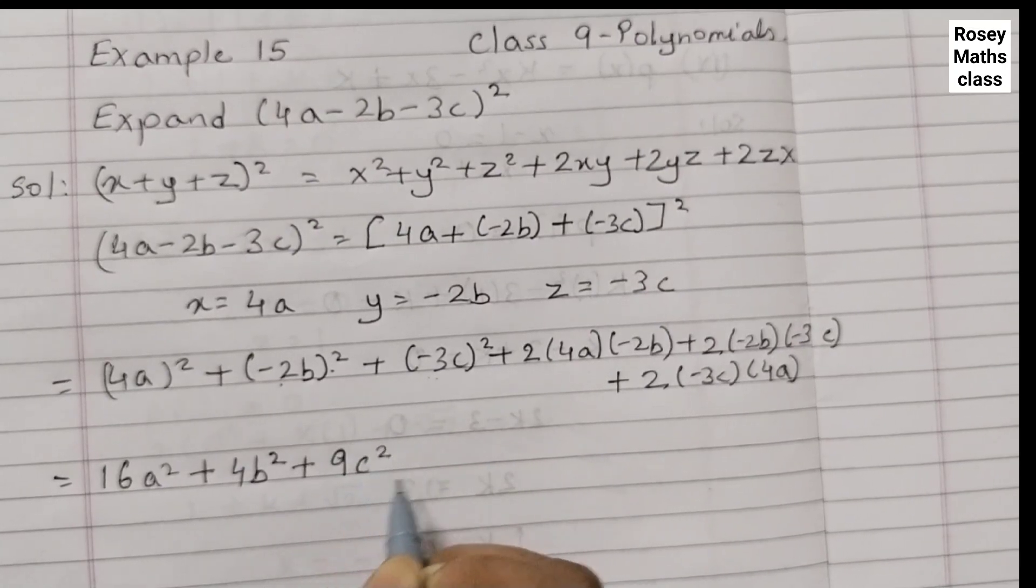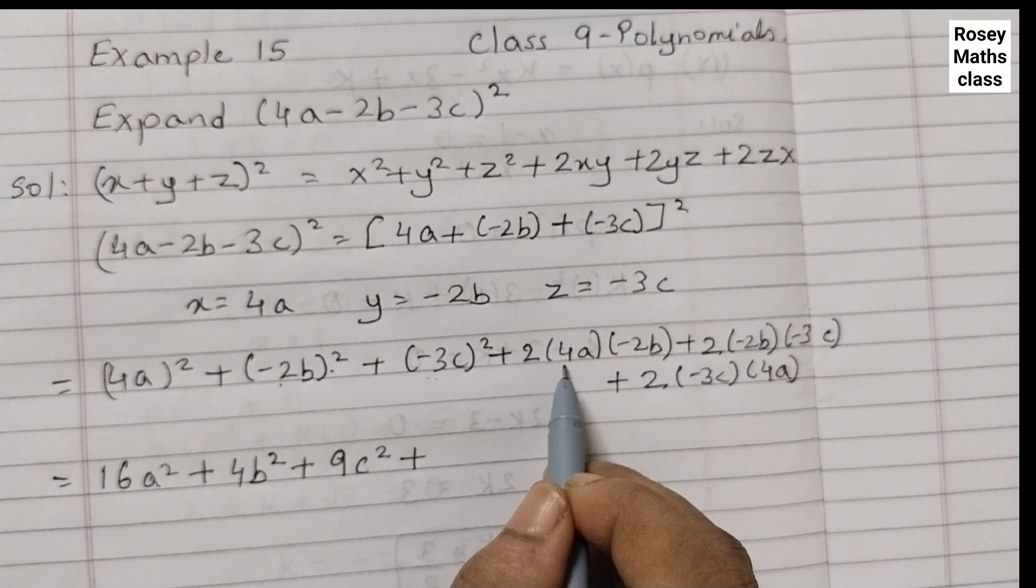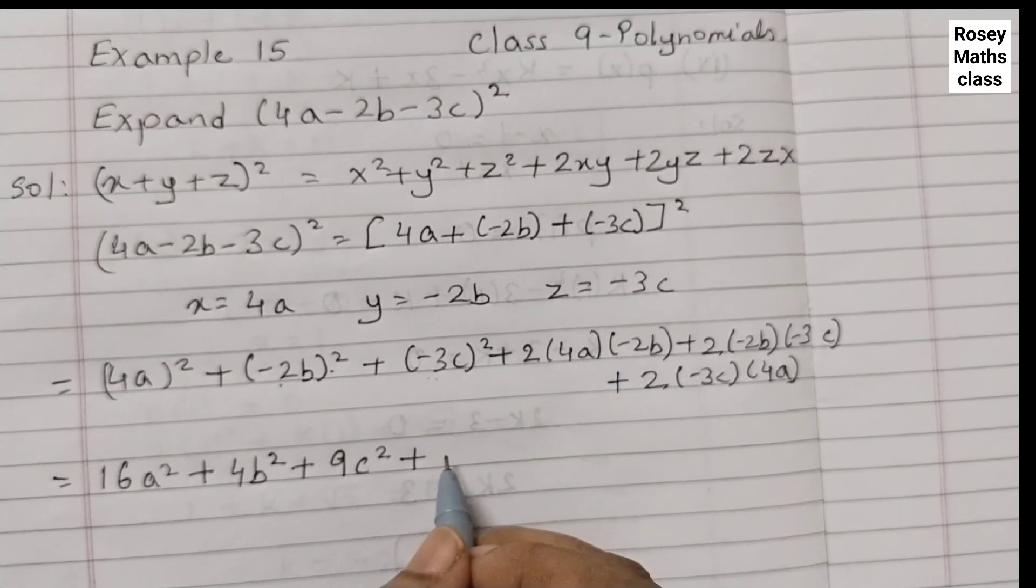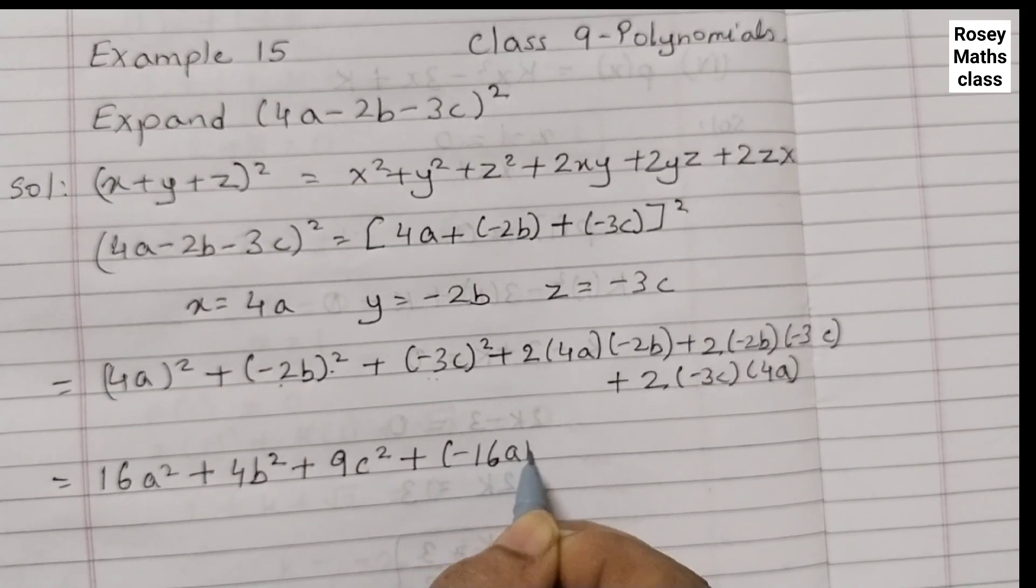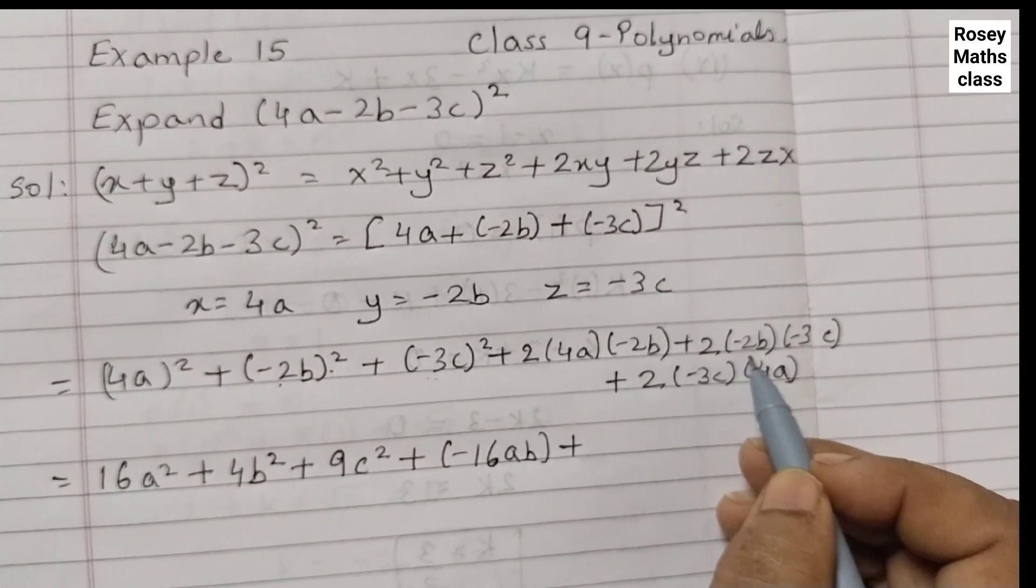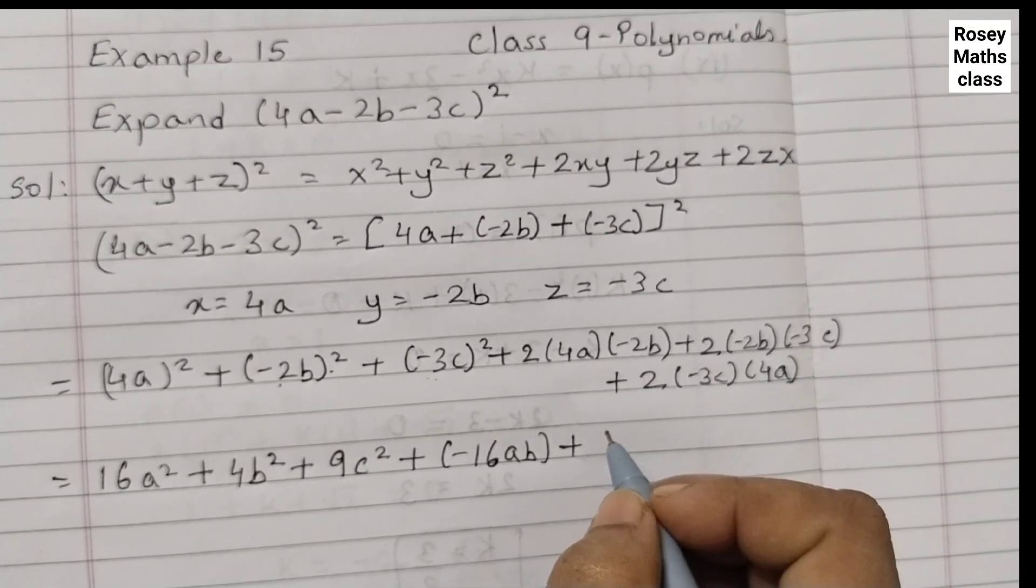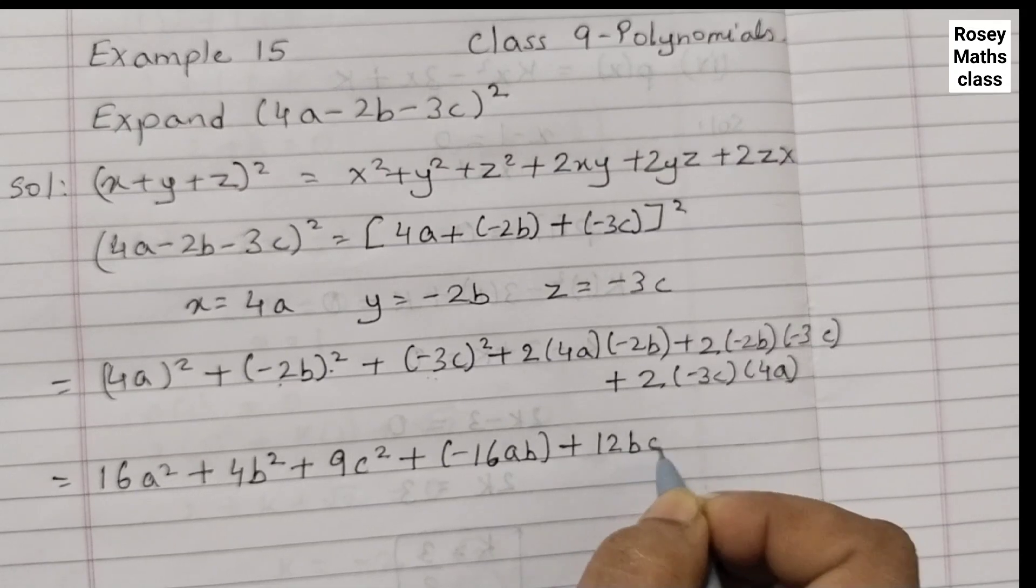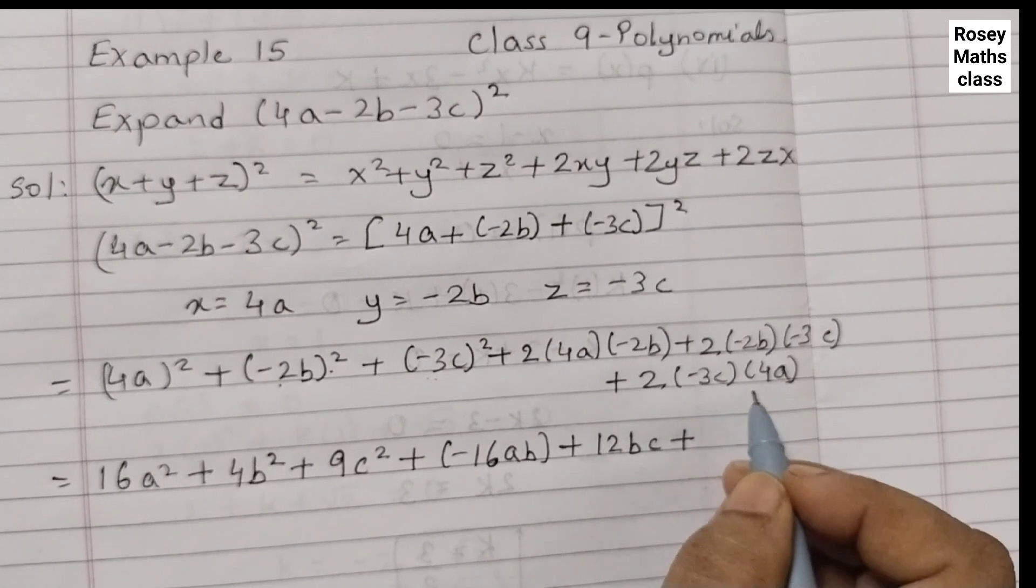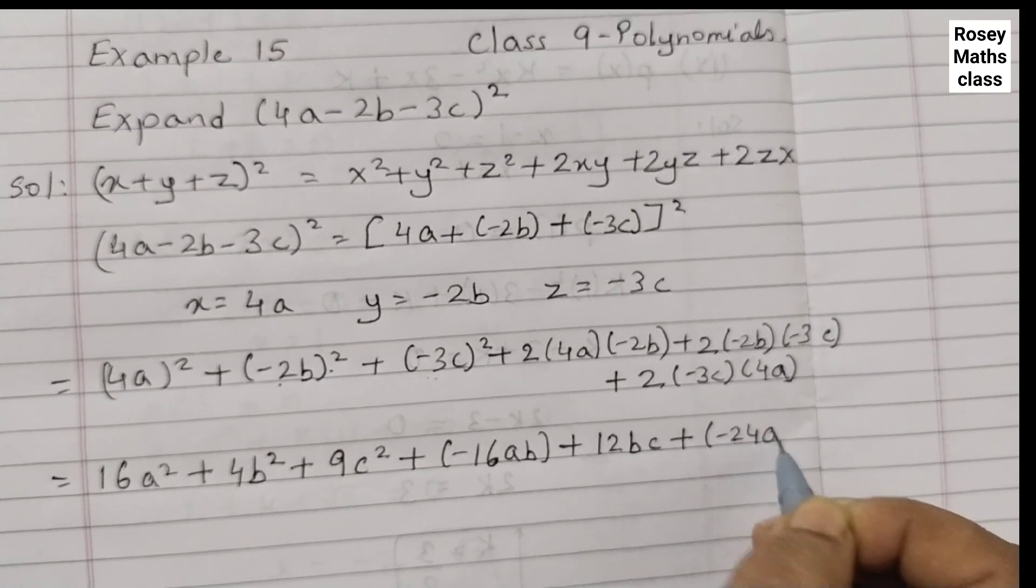1, 2, 3 multiplied. Two 4s are 8. 8 into minus 2 is minus 16. So that's minus 16ab plus 2 into minus 2 minus 4 minus 4 into minus 3 is 4, 3s are 12. Minus minus becomes plus. So 12bc plus 2 into minus 3 minus 6 minus 6 into 4 minus 24. Minus minus 24ac.